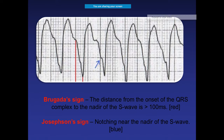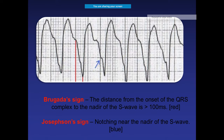Two important signs on ECG are the Brugada sign and the Josephson sign. The Brugada sign refers to the distance from the onset of the QRS to the nadir of the S wave — if this distance is more than 100 milliseconds, the Brugada sign is positive.